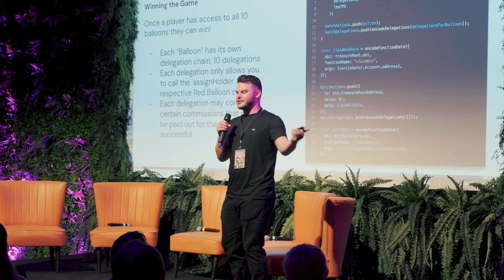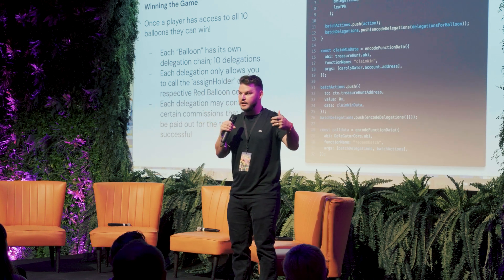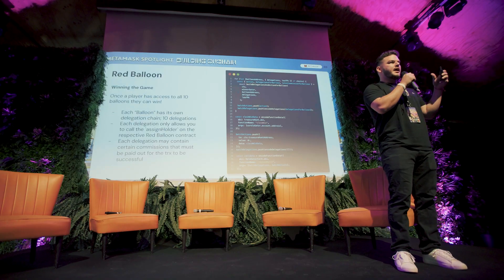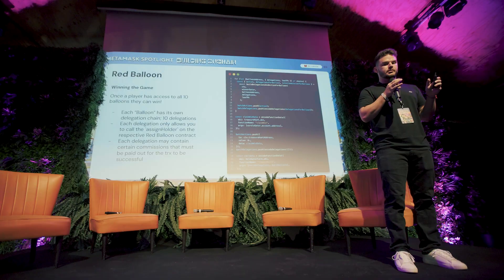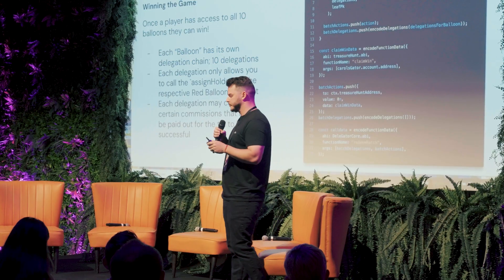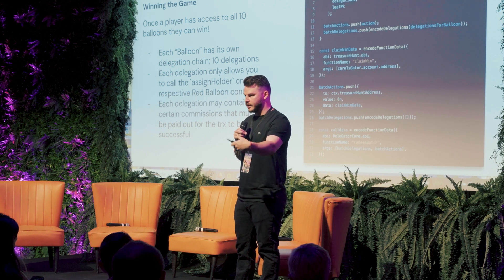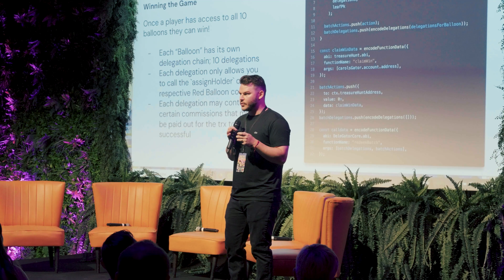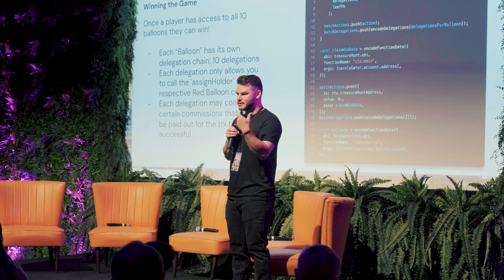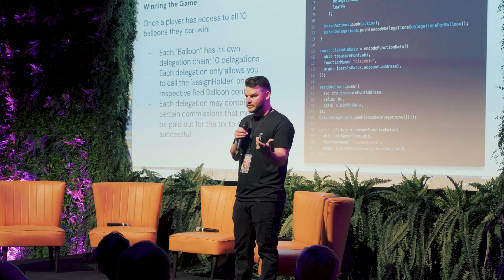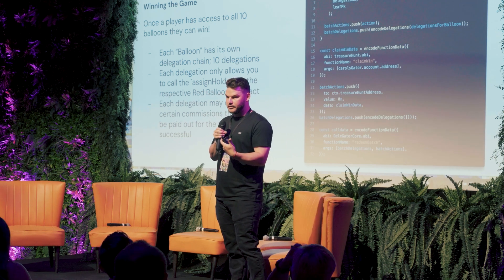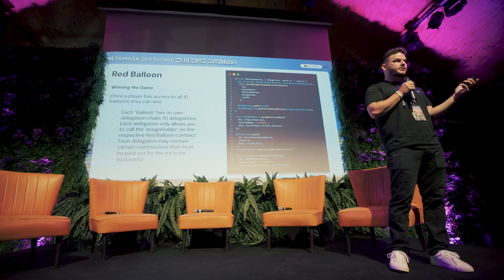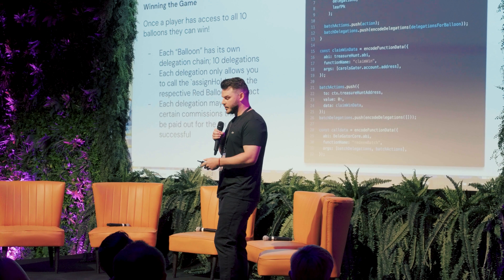Winning the game — 11 on-chain actions. We pack up the 10 delegation chains, one for each balloon. That's 10 on-chain actions calling assign holder and setting it to Carol, the winner. Then the 11th is calling claim win on that treasure hunt contract. We make that atomic — calling assign holder 10 times and then claim win — and it successfully transfers Carol all the ETH winnings. Then in the after hook, it says everything was good, now we pay out everyone. That has to be atomic, or there are ways to grief it.